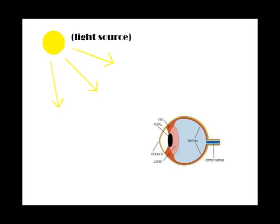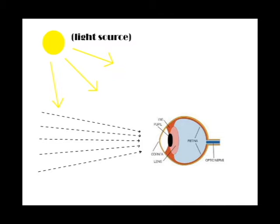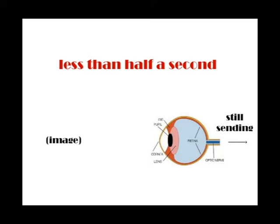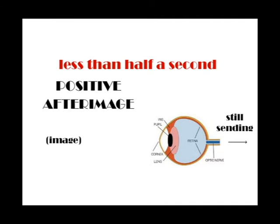When light enters our eyes, the photoreceptor cells in the retina send chemical and electrical signals to our brains to provide vision. When the light is turned off, the photoreceptor cells will continue to send signals for less than half a second in which we can still see the original image. This is a positive after image.